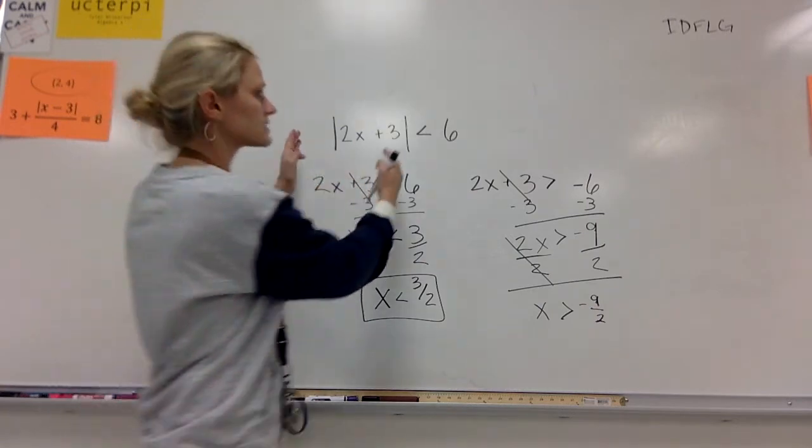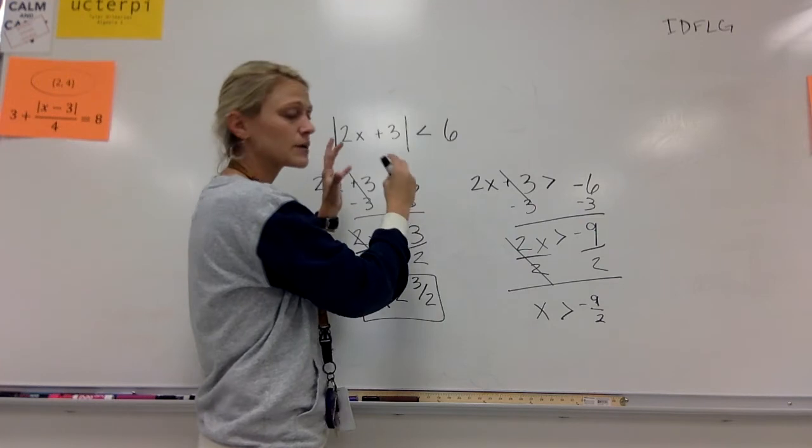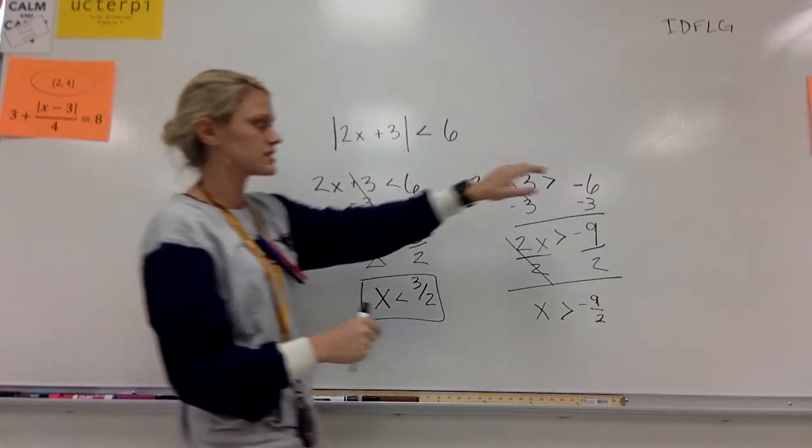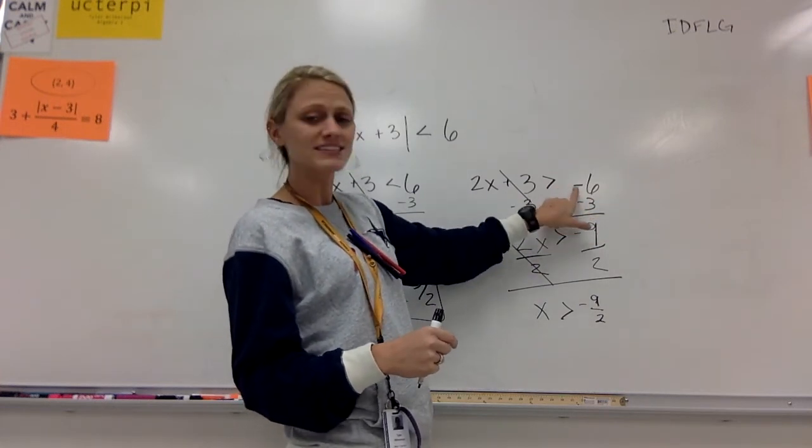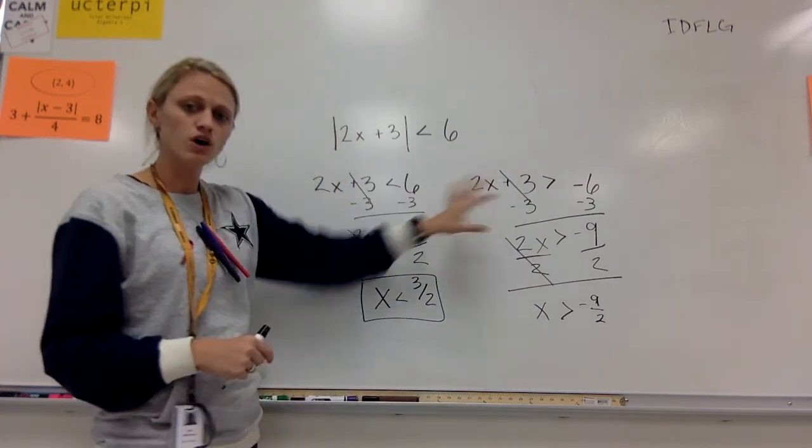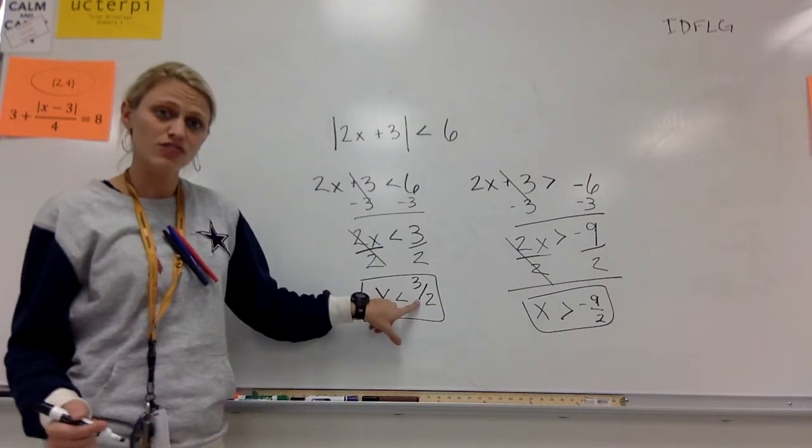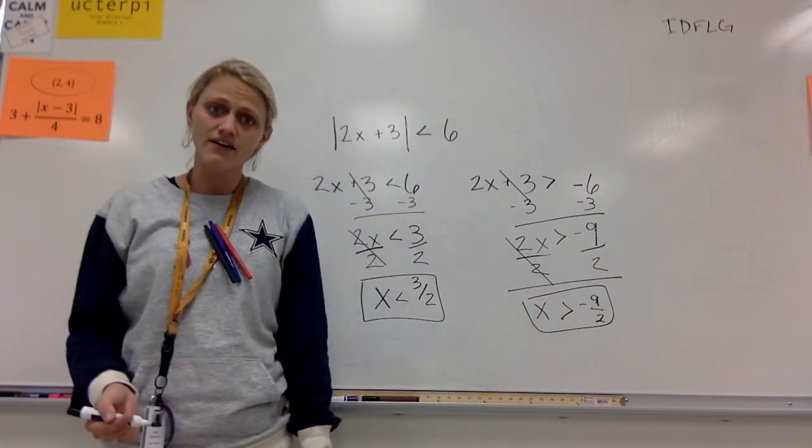So same first step, isolate the absolute value expression, which was already done for us. And then the next step is to split it up like we've done before. So we've got our positive 6 and our negative, but when you make it negative, right, when that sign changes, your symbol just has to flip around, okay? And then you solve both, and we have x is less than 3 halves and x is greater than negative 9 halves.